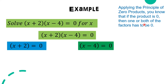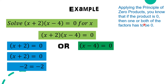By applying the zero product property, we use the addition property of equality by eliminating the number on the left side and transferring it to the right side. We add negative 2 on both sides, so we get x = -2, because positive 2 minus 2 equals zero, and 0 minus 2 is negative 2.